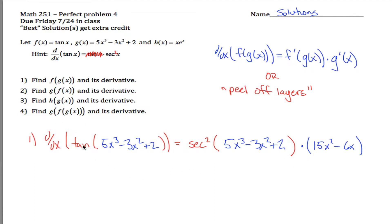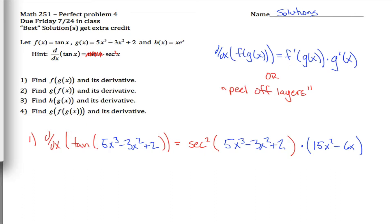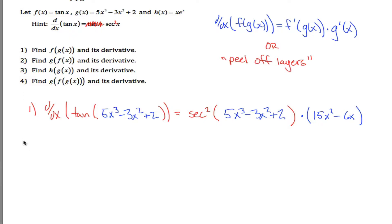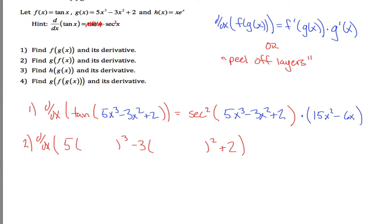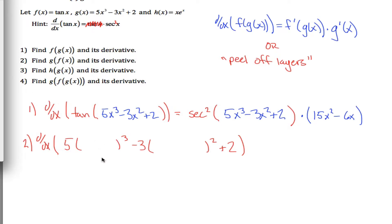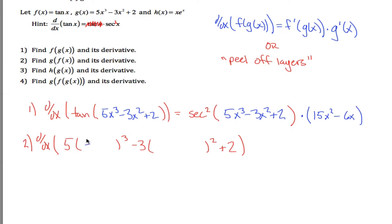For that first one, probably doesn't matter which method you use, but on future problems — especially 3 and 4 — it's really beneficial to do this peel off layers approach. Next, I want the derivative of g of f of x. g of x is 5x cubed minus 3x squared plus 2, but I want g of f of x, so everywhere I would have written x, I write f of x — which is tangent of x.